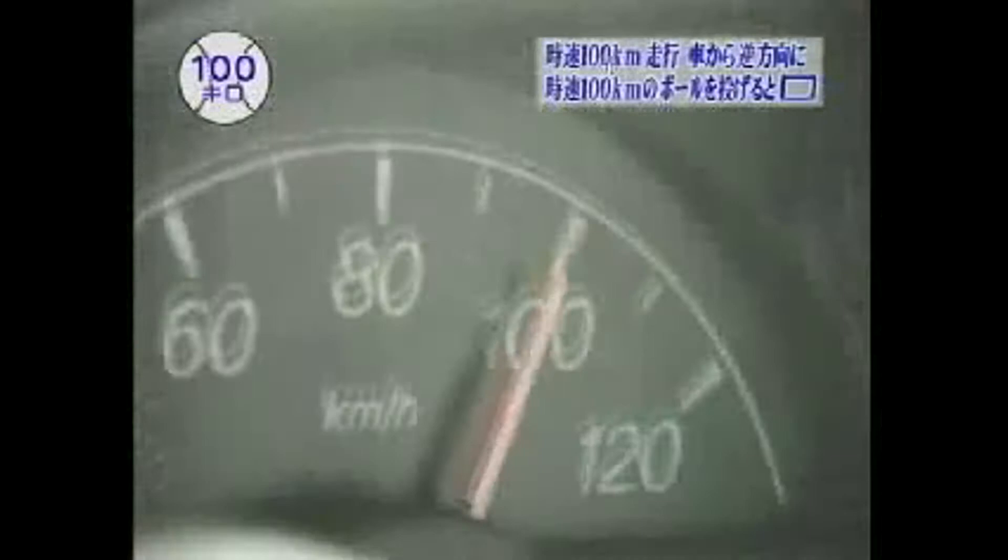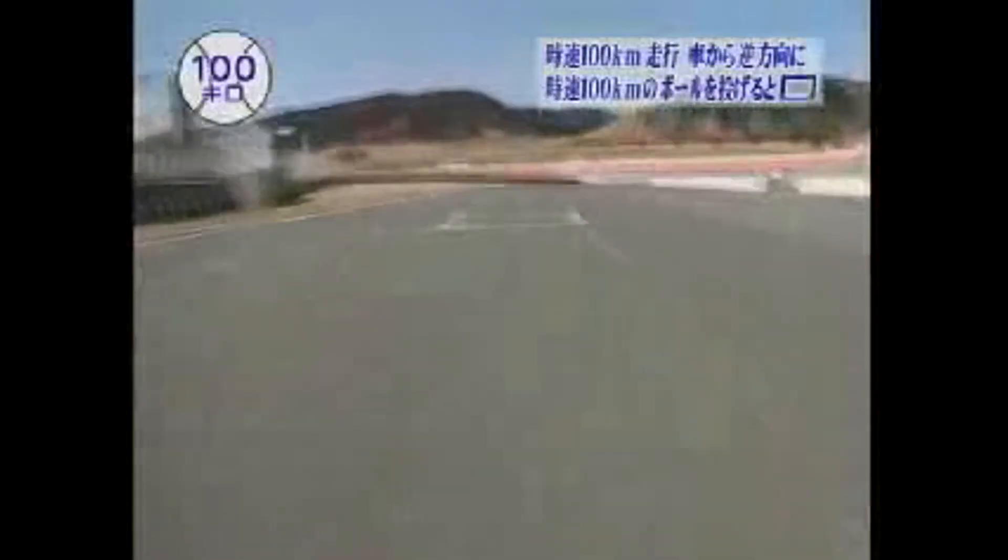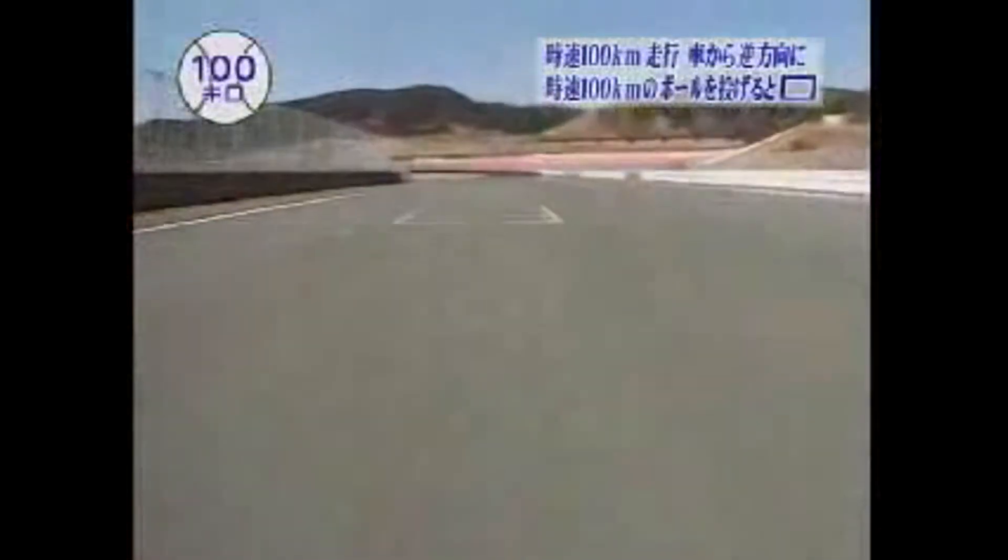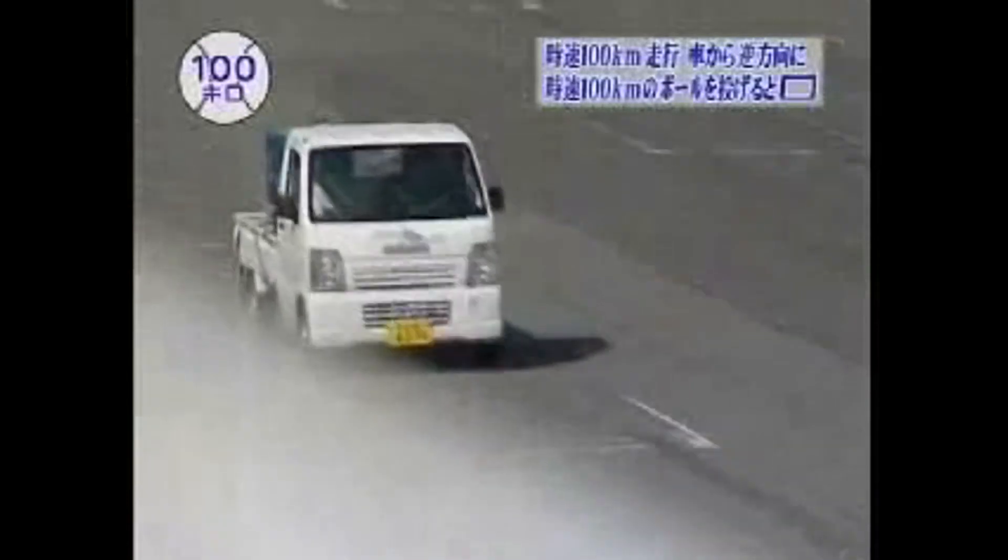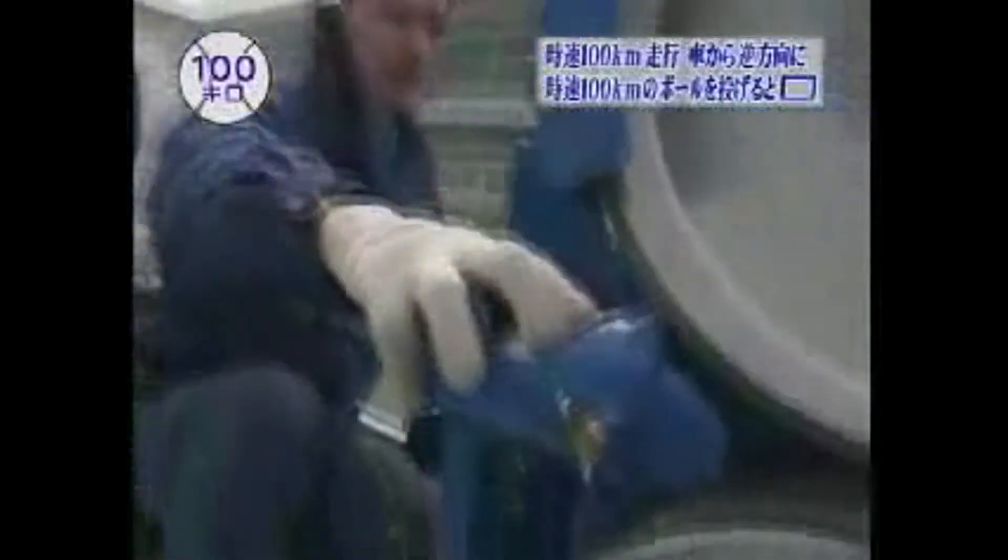100 kilometers per hour, the truck is here. The truck is at the start line. And here is the pitching machine. The ball is on the back of the pitching machine.